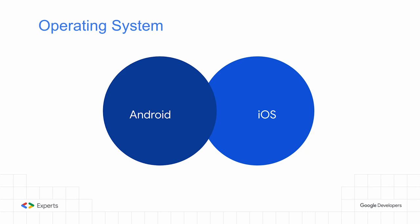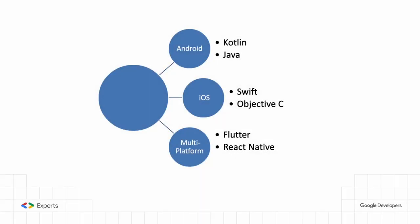The mobile landscape is divided into two operating systems: Android and iOS. If you build for Android you're an Android engineer; if you build for iOS you're an iOS engineer. You can also build for both using Flutter — we have a speaker Romaine who builds with Flutter — or you can build natively, specializing specifically for Android or specifically for iOS. In Android we use Kotlin as the programming language.